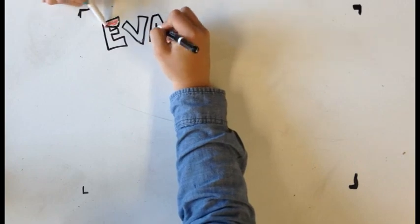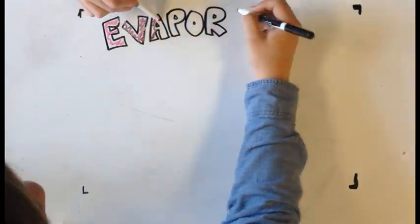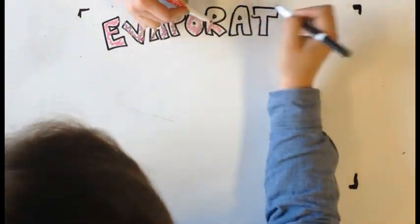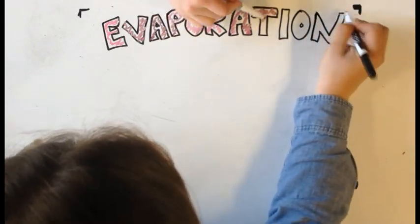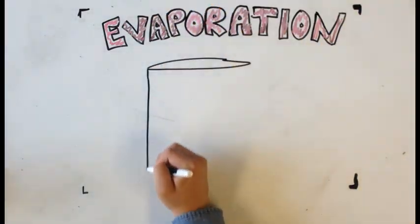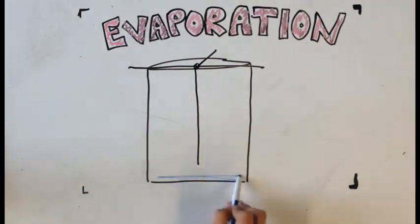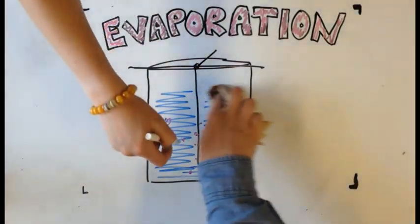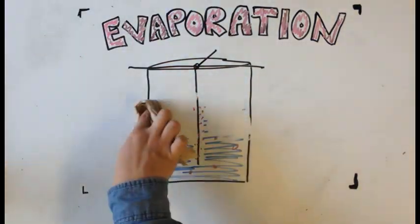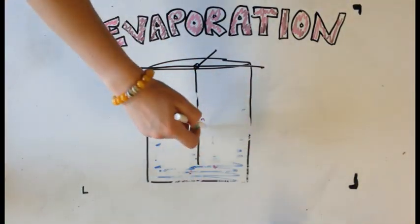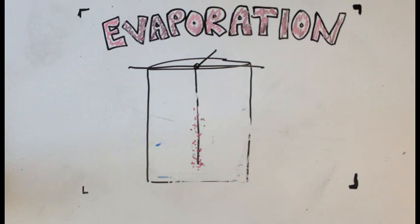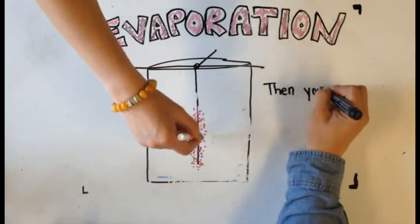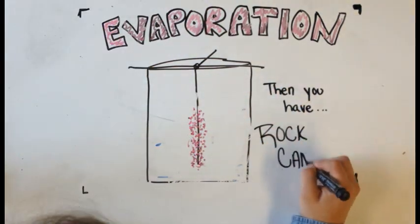So why does the water need to evaporate? Evaporation is necessary because if the water did not evaporate, the sugar molecules would continue to just kind of float around in the water. As more and more of the water evaporates, the sugar molecules become more condensed, aiding significantly in the process of recrystallization and nucleation. This leaves you with rock candy.